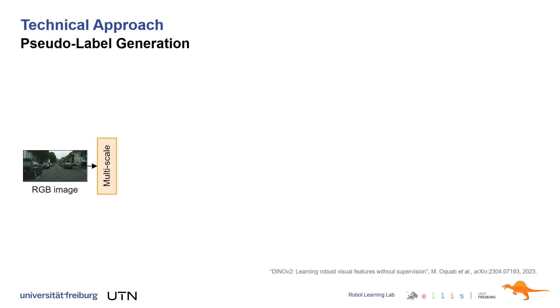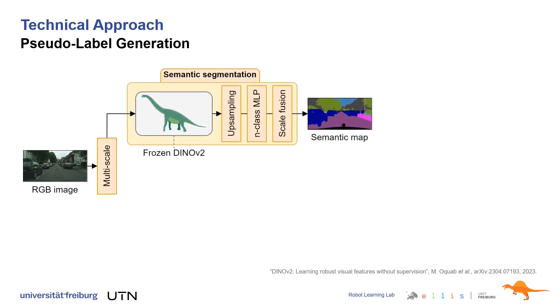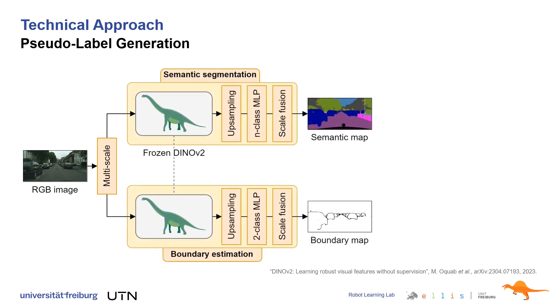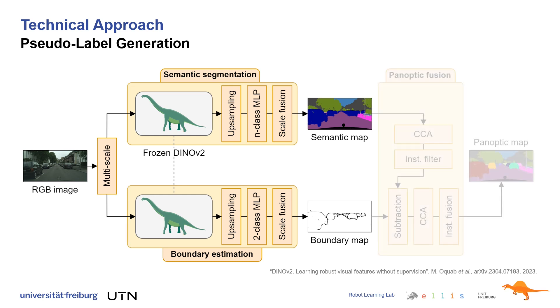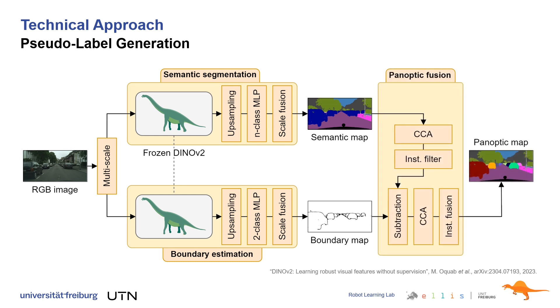The key idea of our pseudo-label generator is to exploit DINOv2 image features for two downstream tasks. We perform semantic segmentation with an n-class MLP and estimate object boundaries using a binary classifier. Finally, we fuse the output of both modules to obtain the overall panoptic pseudo-label.